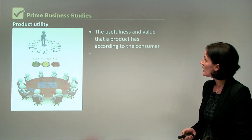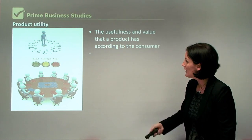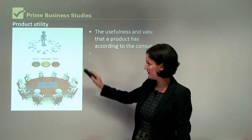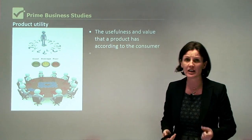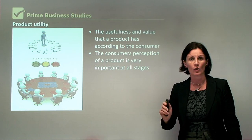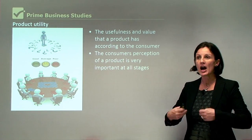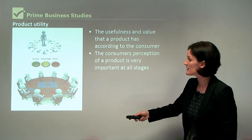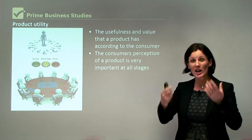Product utility refers to the usefulness and value that a product has according to the consumer. Looking at our diagram, we need to always be thinking: what does the consumer think? What does our feedback reveal? The consumer's perception of a product is very important at all stages. A consumer might perceive our product as low quality or high quality, and we need to decide whether we are happy with that perception or whether we need to make changes to alter it.